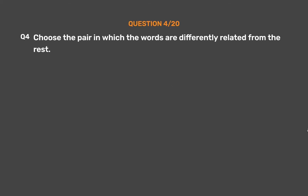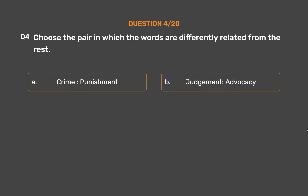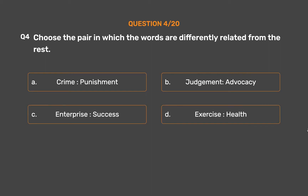Question number 4. Choose the pair in which the words are differently related from the rest. Option A: Crime, Punishment. Option B: Judgment, Advocacy. Option C: Enterprise, Success. Option D: Exercise, Health.